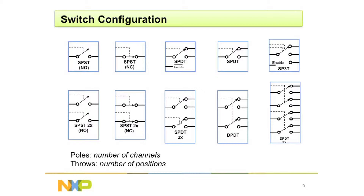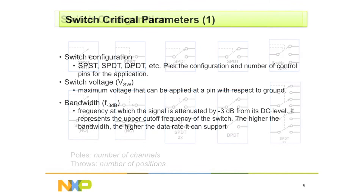Let's look at some of the standard switch configurations. You've got your average single-pole single-throw, single-pole double-throw. All it's telling you is the number of contacts and the number of positions that you can close them in. There's a wide variety — virtually any kind you need, there's probably a switch out there already.